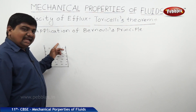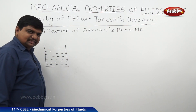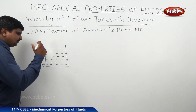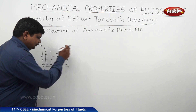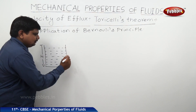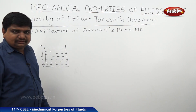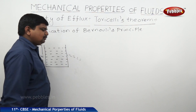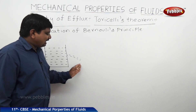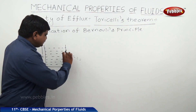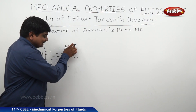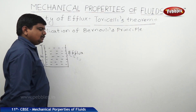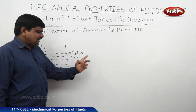Whenever this tank is closed, it has a height of capital H — the height of the water tanker is H. On one side, we make a hole to let the water leak out. Through the hole, the water will come out and it follows a parabolic path as it approaches the earth. The water coming out of the hole from a certain height is called efflux. Entering is influx; leaving is efflux.